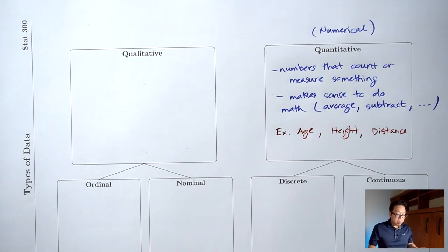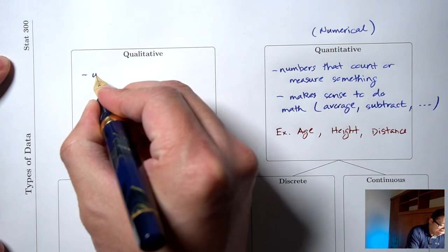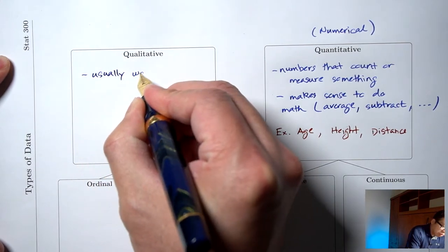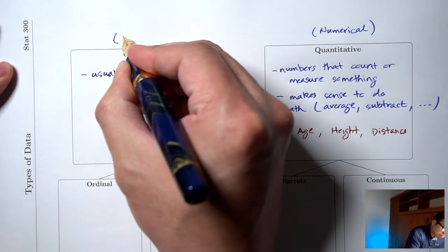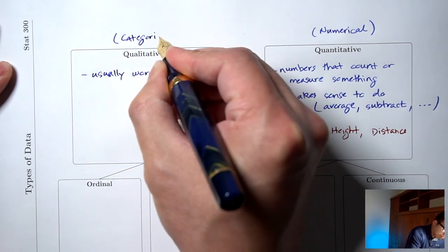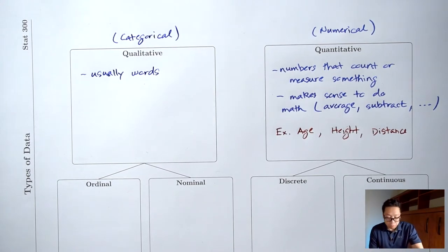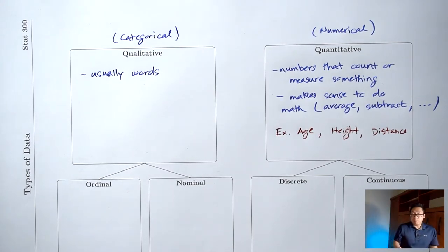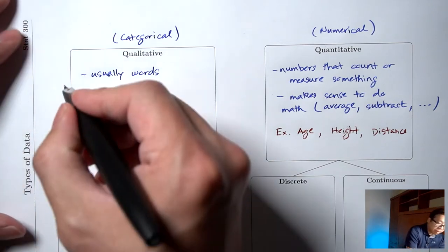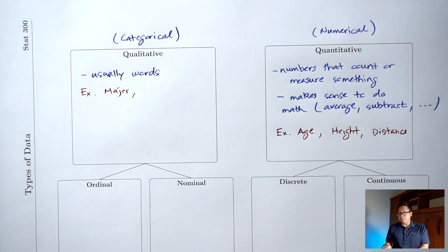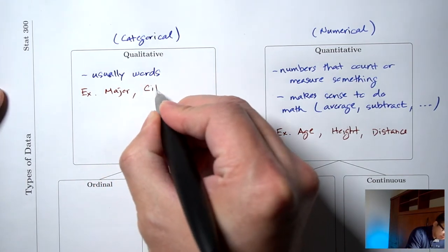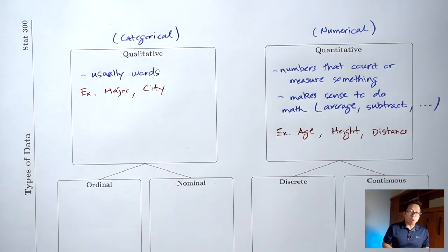The other big type of data is called qualitative. These are going to be usually words, and these words are usually labels for categories, which is why qualitative data is sometimes called categorical data. When I ask you what's your major, you give me a word — psychology, business, nursing. What city do you live in? You would also give me a word. Most of the time, categorical or qualitative data are going to be words.